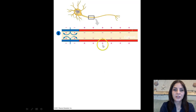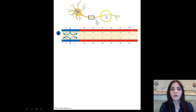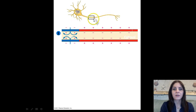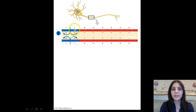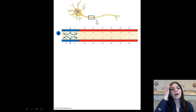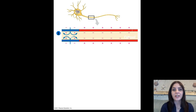Looking at this diagram, right here is where our action potential is about to occur. We have our neuron, and this long part is going to be the axon. The box right here is what we've zoomed in on — a portion of the axon. What's occurring here is a depolarization. That's when those sodium channels are opening, and sodium is starting to rush into the cell.